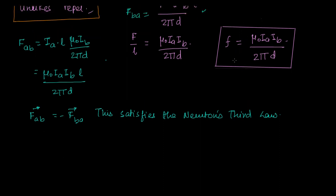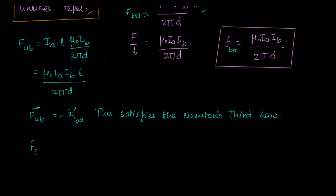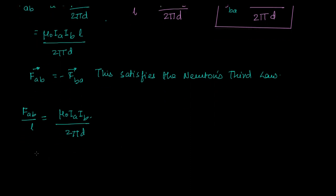And this I can say is FBA, force per unit length on B due to A. So I can also find out the same thing for this, FAB. So I can say that here, I can say that FAB upon L is equal to Mu0 IA IB upon 2 pi D. So I get Mu0 IA IB upon 2 pi D. We get the point.